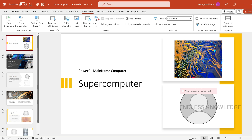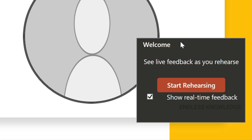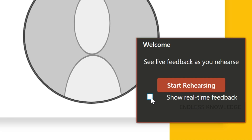If we click on Rehearse with Coach, we will start the slideshow. In the bottom right side, a welcome dialog box will appear and we will start rehearsing. If you are doing live feedback or real-time feedback, you can enable it. If you want the report only, you can uncheck it. Then we will start rehearsing.